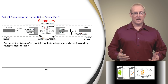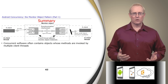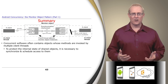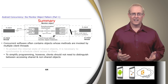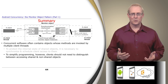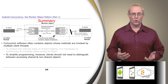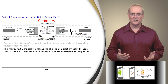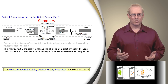In summary, concurrent software often contains objects whose methods are invoked concurrently by multiple client threads. To protect the internal state of objects shared by multiple threads, it's necessary to synchronize and schedule access to them. To simplify programming, it's often helpful if the interface an object exposes to its clients is the same regardless of whether the object is shared by multiple threads or accessed by a single thread. The monitor object pattern provides an intuitive programming model that enables client threads to share objects and cooperatively ensure their serialized yet interleaved execution sequence, as described at this link.